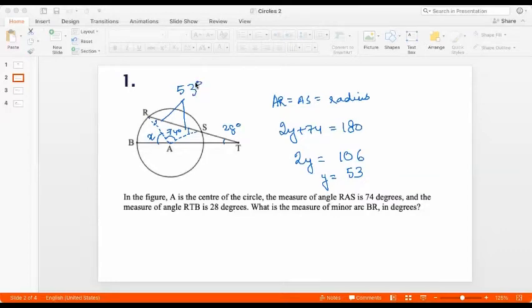Now we see that in this triangle ART, in triangle ART, angle RAB is the external angle, right? RAB is the external angle. And what do we know about the external angle? External angle is the sum of interior opposite angles.